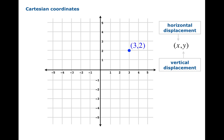3 comma 2, represented by the coordinates (3,2), is the point obtained by taking 3 steps to the right and 2 steps up. The point (-2,4) is obtained by taking 2 steps left of the origin and then 4 steps up. And the point (1,-3) is obtained by taking 1 step to the right and 3 steps down.